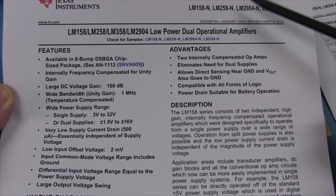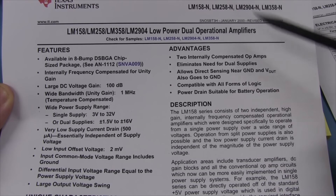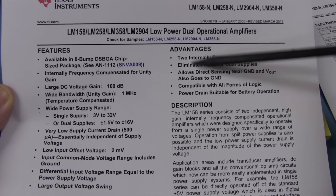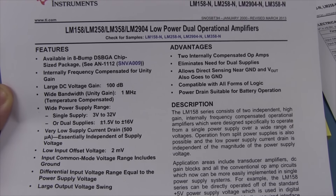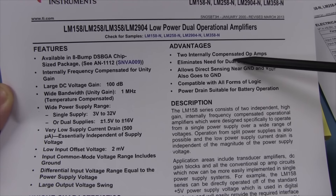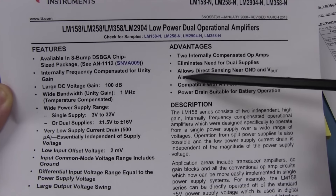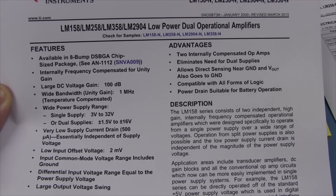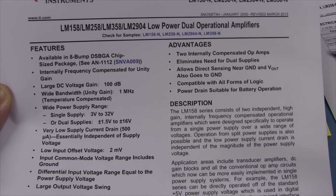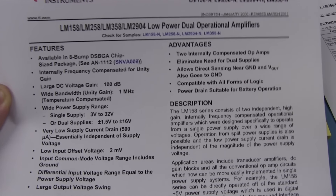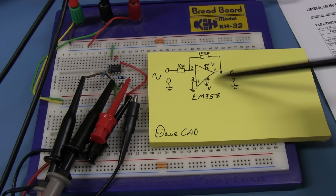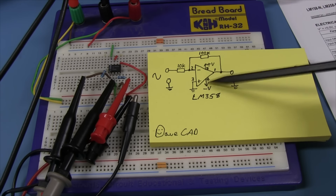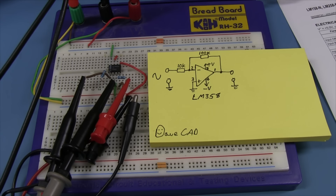Now, I actually chose the LM358 for a reason, because it is not like a regular op amp, and not quite like a rail-to-rail op amp — it's sort of halfway in between. It eliminates the need for dual supplies, you can use it as a single-supply op amp. But it is extra special in that it allows direct sensing near ground, and V out also goes to ground. It's not rail-to-rail — it won't go all the way up to the positive rail on the input and output, but it will go down to the negative rail. So even if we power it from split supplies of plus minus 15, the input will allow sensing all the way down to the negative rail, and the output will go all the way down to the negative rail as well.